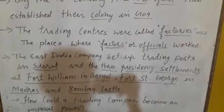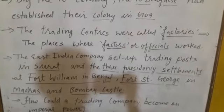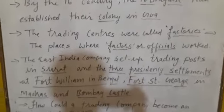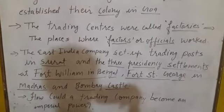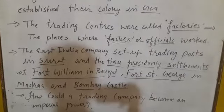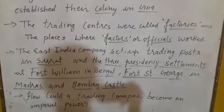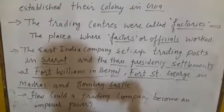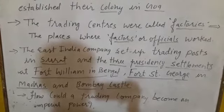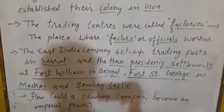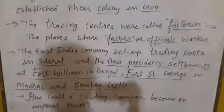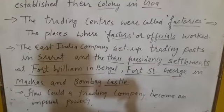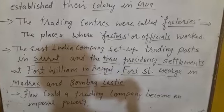The trading posts located by different countries were known as factories. Some of the factories were fortified as a safeguard from rival trading companies. Fortified means to provide with defensive work as protection against attack. So many companies from different countries like France, Spain, and England came to India for trading purposes, and they were all rival trading companies.